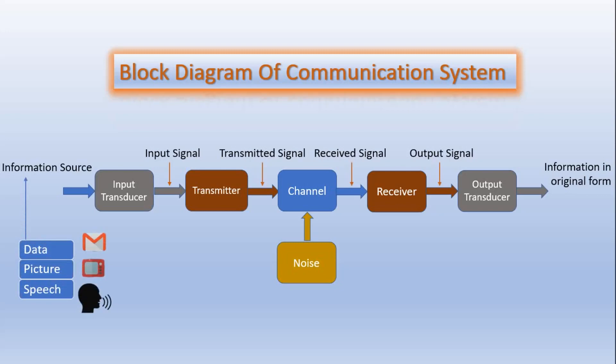All these information signals then go to the input transducer. A transducer is a device which converts one form of energy into another form. The message from the information source may or may not be electrical in nature. When the message produced by the information source is not electrical in nature, an input transducer is used to convert it into a time-varying electrical signal. The signal which comes out from the input transducer is called the input signal.